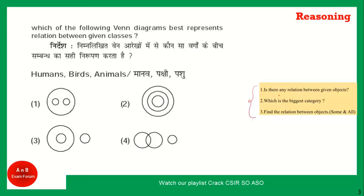The first step is: is there a relationship between given objects? Yes, there is a relationship. Which is the biggest category? From my perspective, animal is the biggest category, so I draw it like this - this is the animal portion. Birds cannot be animals, so we will make a separate circle that represents birds.